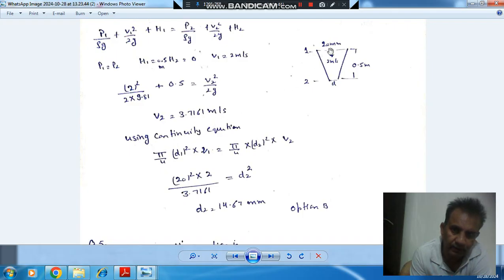Now we apply continuity equation. Here diameter is 20 mm, so area is π/4 × d1² × v1. d1 is 20 and velocity here is 2 meter per second. Here diameter is d2, then area is π/4 × d2² × v2.